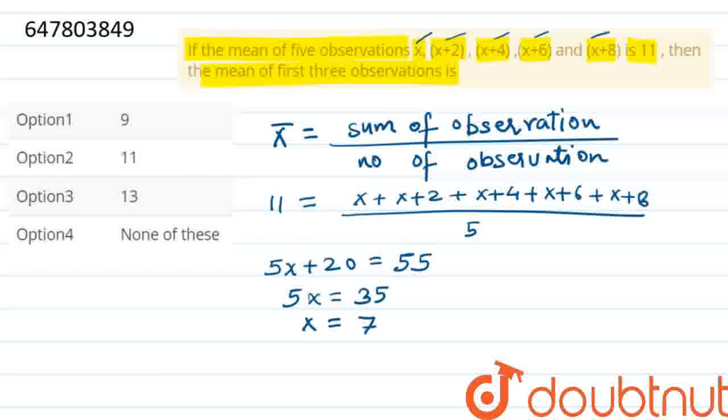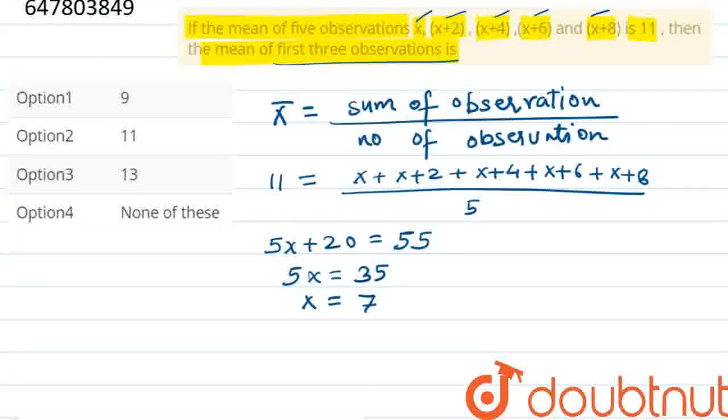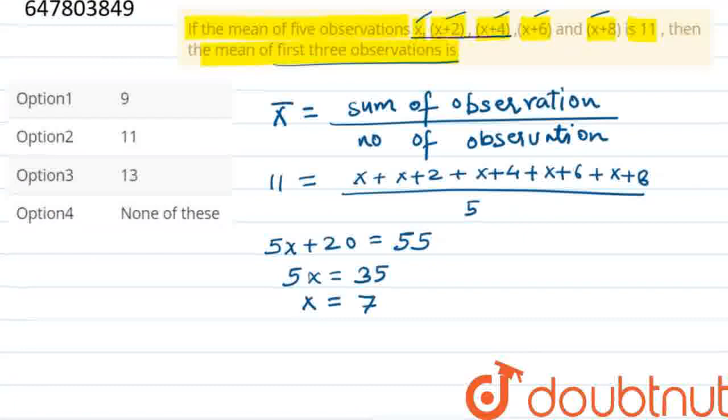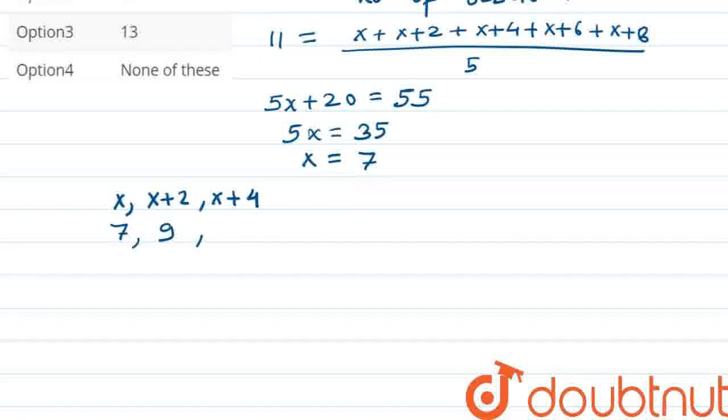So अब हमें first 3 observations का भी mean निकालना है. So first 3 observations क्या है? x, x plus 2, and x plus 4. यहां से मिल गया. So x, x plus 2, and x plus 4. हम इसमें 7 के वाली पूट करेंगे. तो मिलेगा 7, 9, and 11.